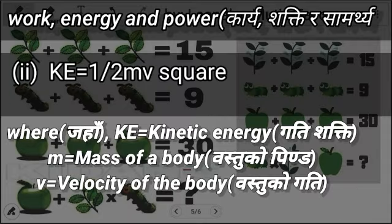Number two: KE equals one-half m v squared, where KE equals kinetic energy (gati sakti), m equals mass of a body (bastu ko pinda), and v equals velocity of the body (bastu ko gati). Say it again.